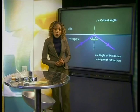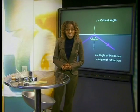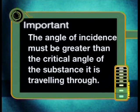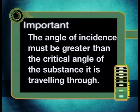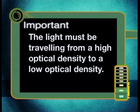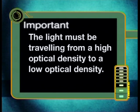There are two important conditions for total internal reflection to happen. Firstly, the angle of incidence must be greater than the critical angle of the substance it is traveling through. And secondly, the light must be traveling from a high optical density to a low optical density.